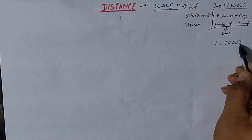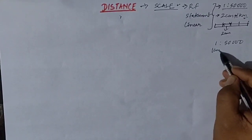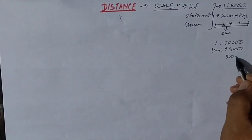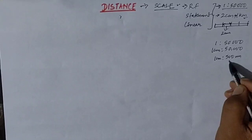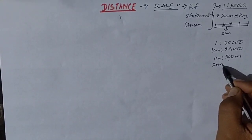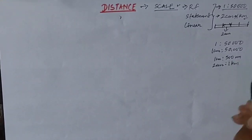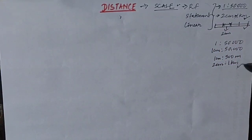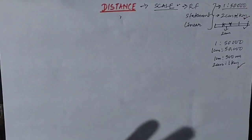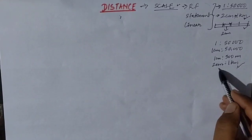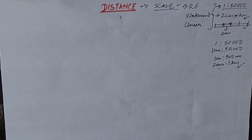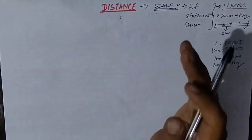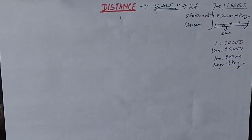In the RF scale, 1:50,000 means 1 centimeter on the map represents 50,000 centimeters on the ground. Converting 50,000 centimeters to meters gives 500 meters, so 1 centimeter represents 500 meters, meaning 2 centimeters represent 1 kilometer. All three different scales show us the same thing: 2 centimeters equals 1 kilometer. The scale of this map is 2 cm on the map represents 1 km on the ground, as the definition of scale is the ratio of distance on the map to distance on the ground.